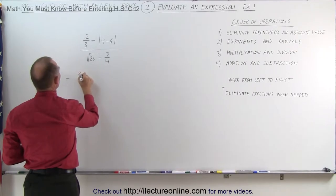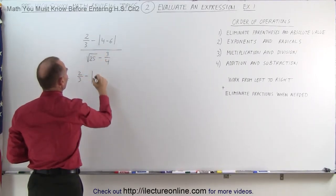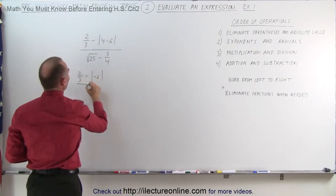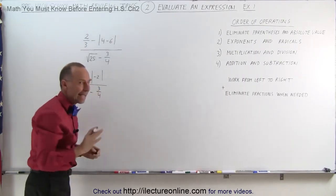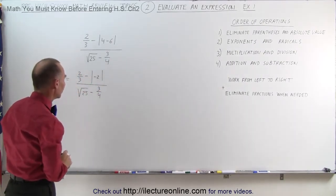So this becomes equal to 2/3 minus the absolute value of 4 minus 6, which is minus 2, divided by the square root of 25 minus 3/4. Notice we're not yet tackling the fractions. We'll get to that in just a moment.